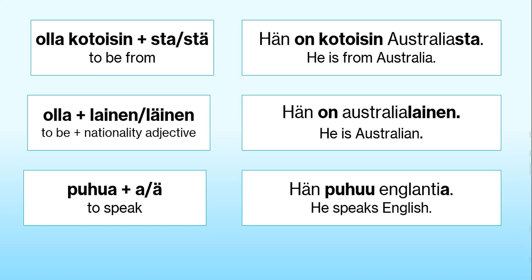To say where somebody is from, we'll need the phrase olla kotoisin plus the name of the country plus the ending STA or STÄ. For example, to say 'he's from Australia', you can say hän on kotoisin Australiasta. You can also leave the word kotoisin off altogether and just say hän on Australiasta.